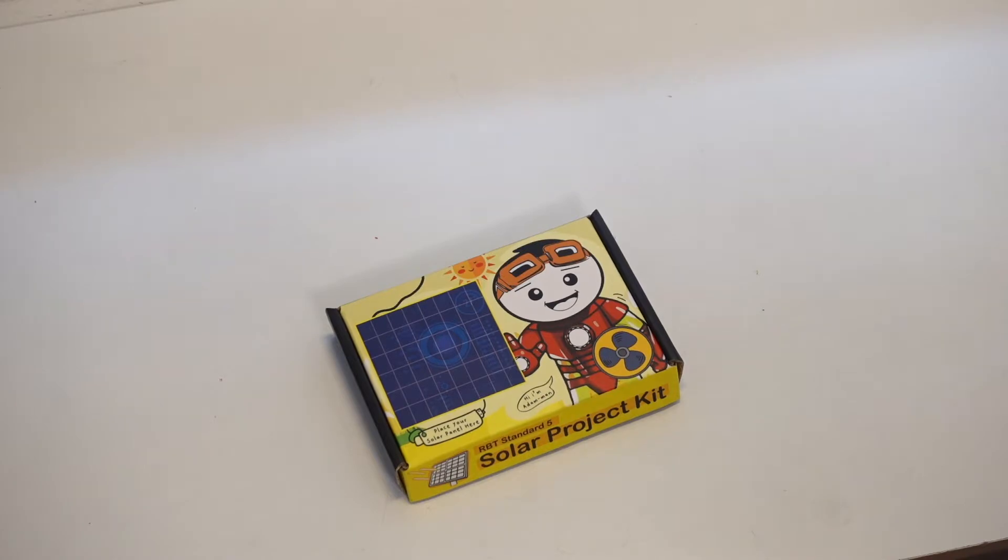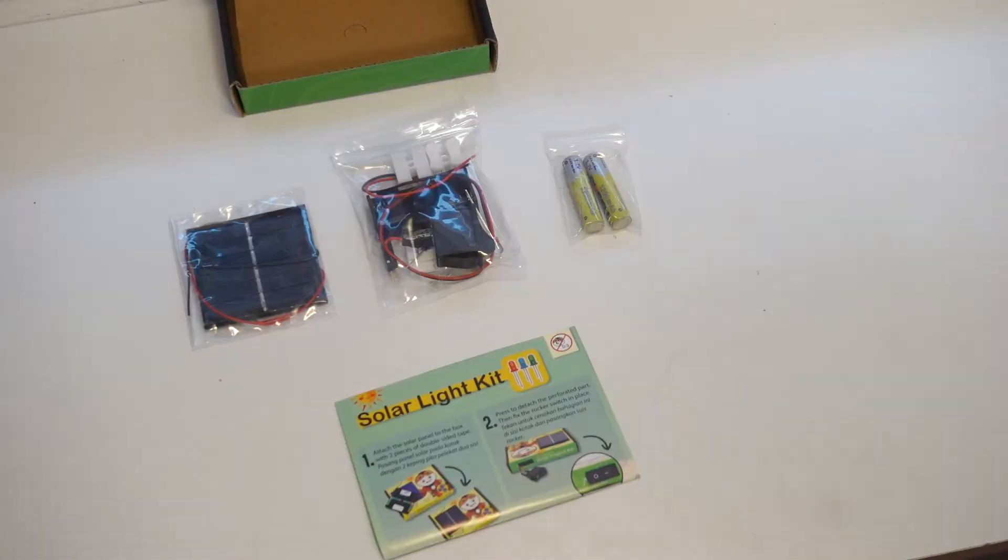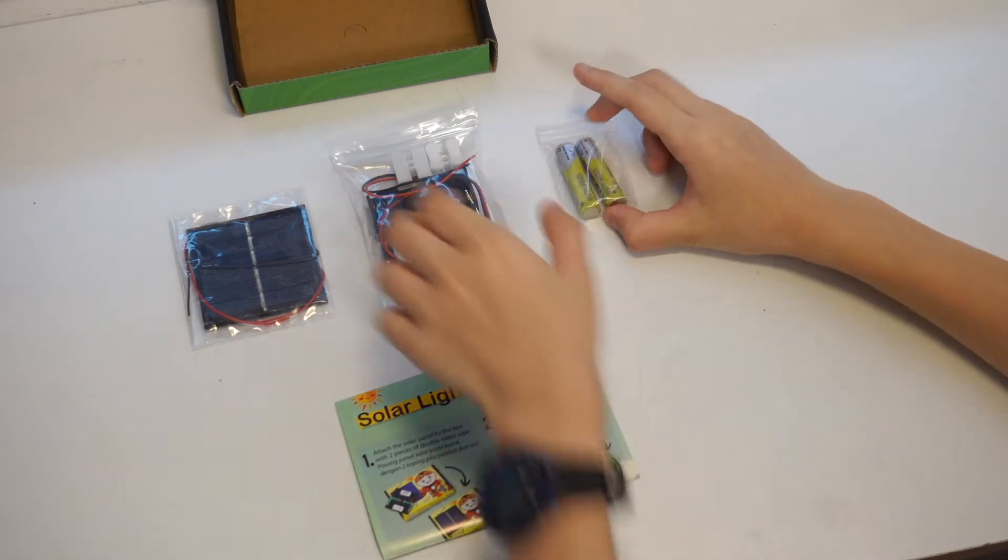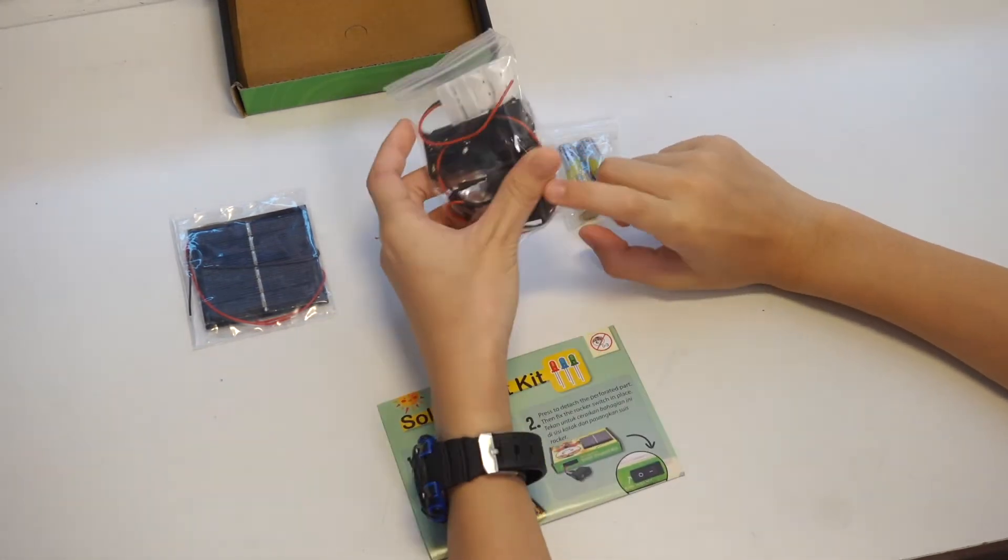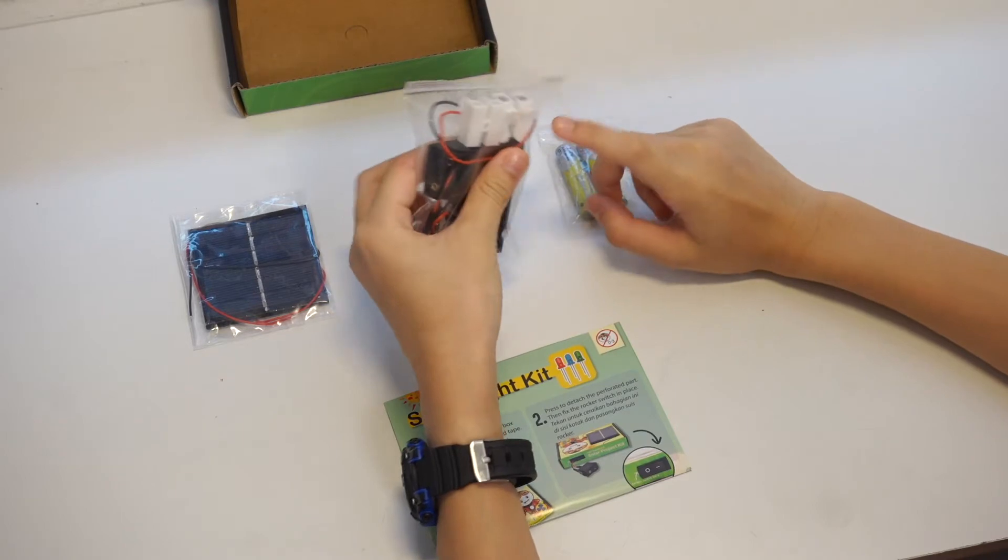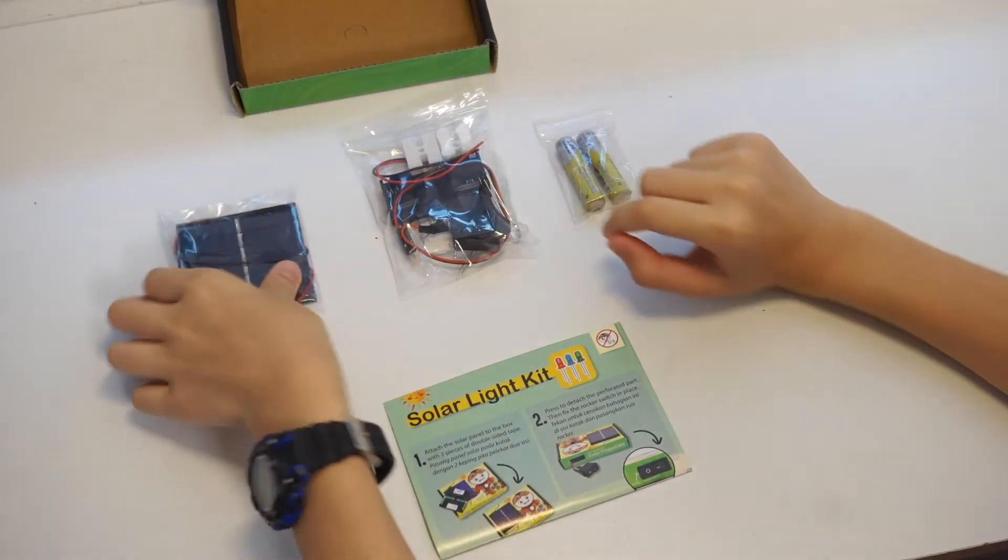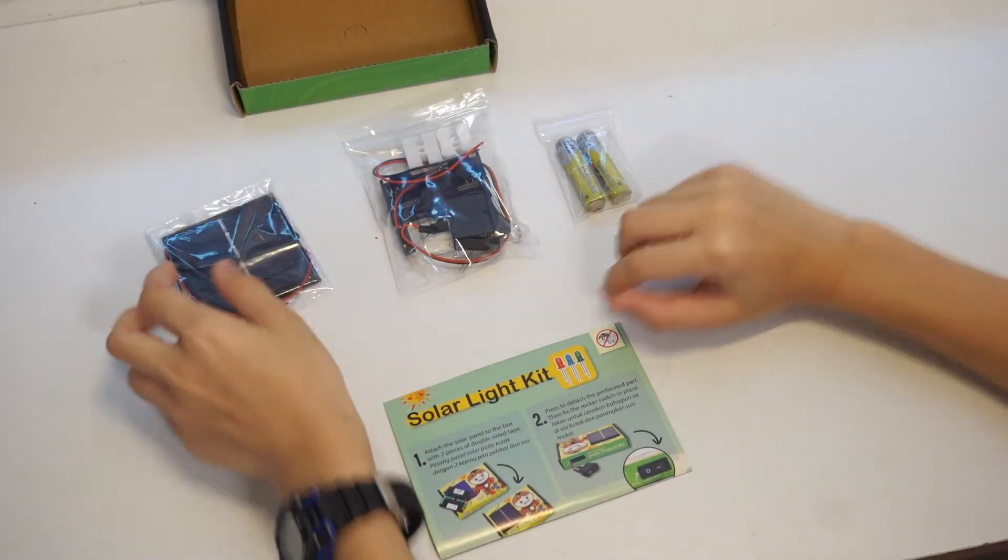Alright, let's open this up. Over here, looks like we have the battery, the battery holder, the switch, the LEDs and the clip. And a solar panel and the manual.